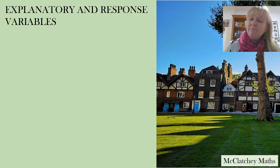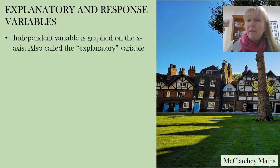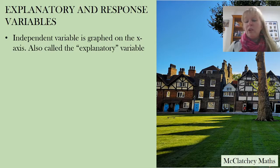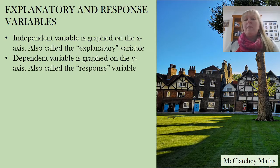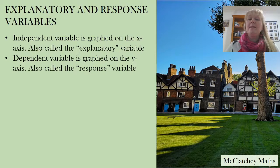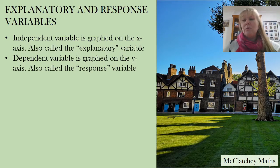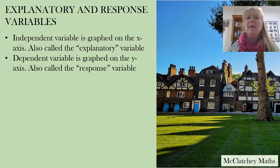This next part is for Year 12 students — Year 10 students can just wait a few seconds. We're going to talk about explanatory and response variables. An independent variable is graphed on the x-axis and is also called the explanatory variable — a good way to remember that is 'x for x-axis, explanatory.' The dependent variable is graphed on the y-axis and is also called the response variable. Just memorize: independent = explanatory = x-axis.